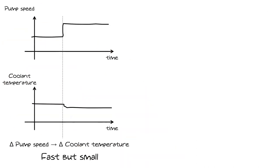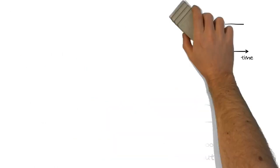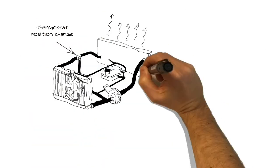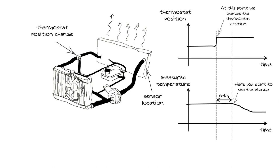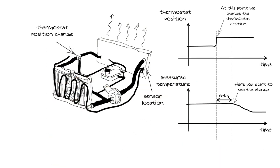Assume we have one sensor at the inlet and one at the outlet of the load, and we can actively manipulate the pump, fan and thermostat. We figure out that a large pump speed change produces a quick but small change in coolant temperature, whereas a fan speed change has a larger effect but takes much more time. When we change the thermostat position, it takes some time before we see a change in temperature because the coolant has to do the whole round trip through the radiator. We are in front of a time delay system.